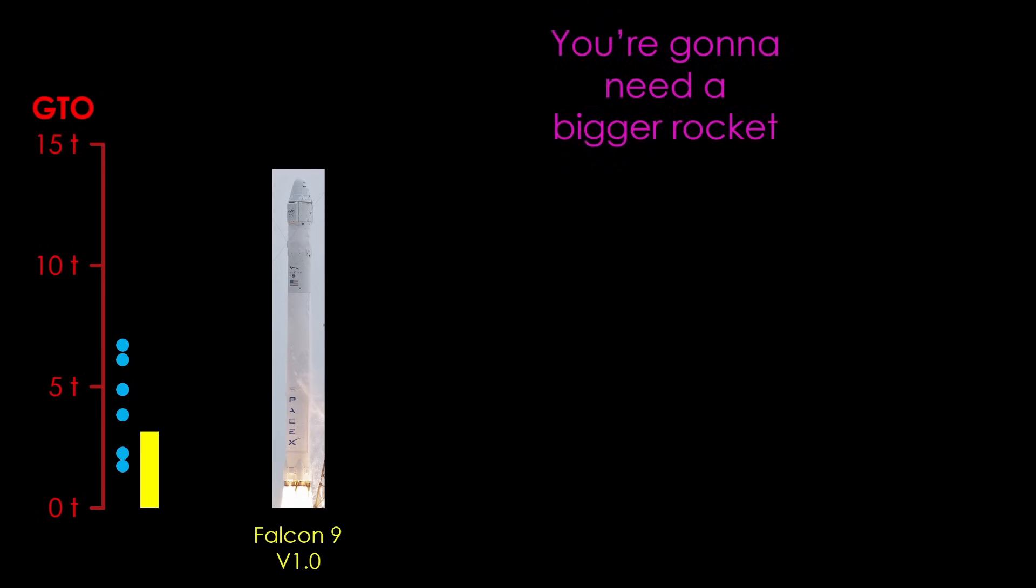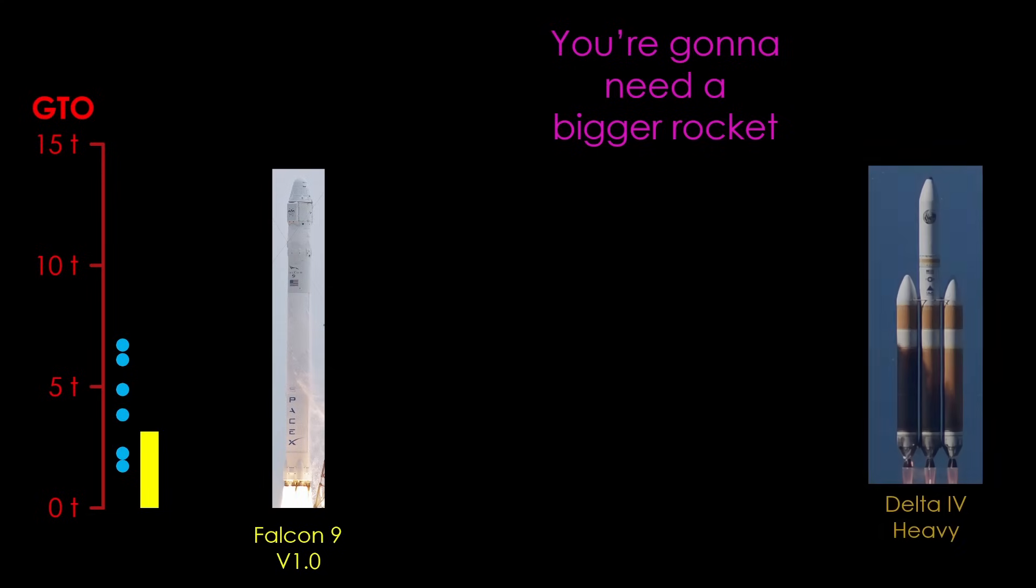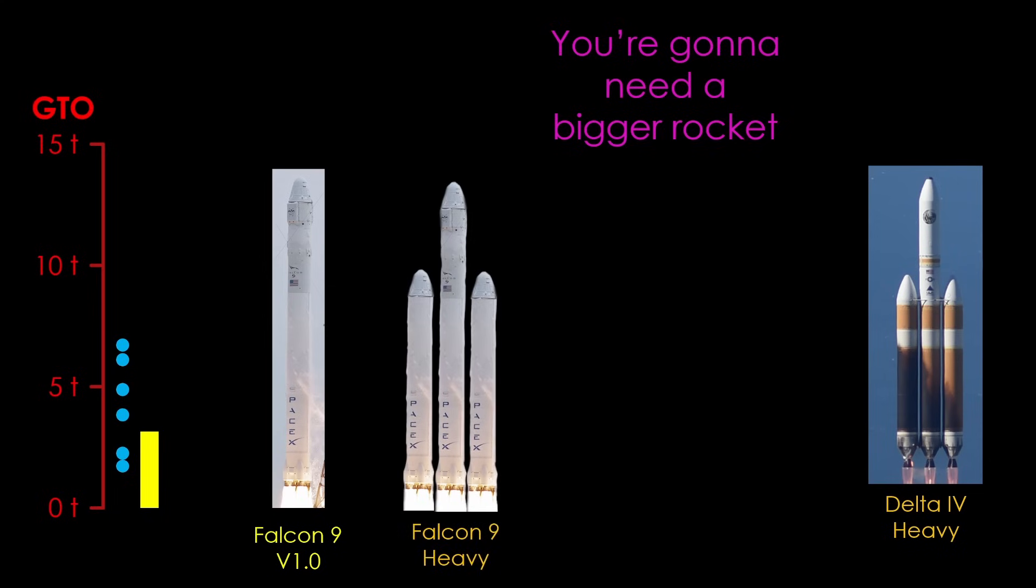When McDonnell Douglas was designing the Delta IV, they had the same problem, and they came up with the Delta IV Heavy, which roughly tripled the GTO payload of the rocket. That's why SpaceX announced the rocket they called Falcon 9 Heavy. It gave a much higher GTO payload, one which would cover all the current satellite sizes. It's a cool idea, but is a significant engineering challenge.